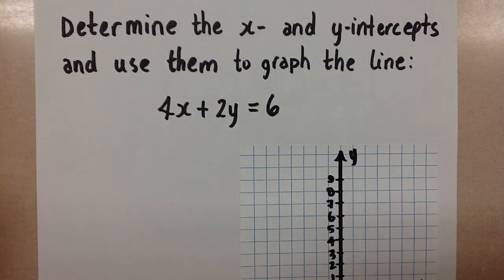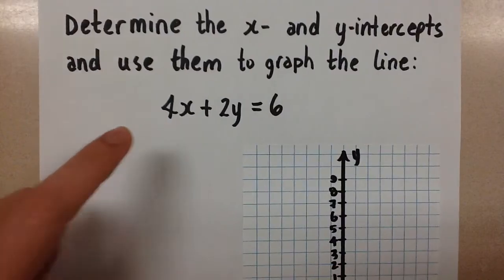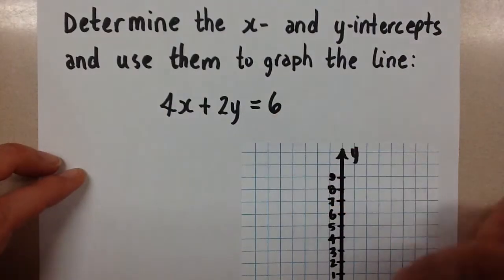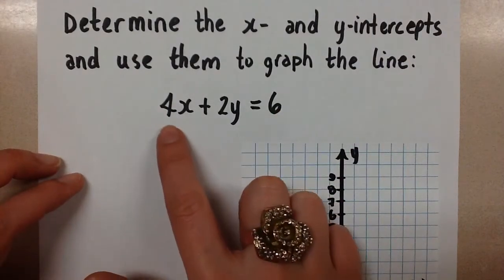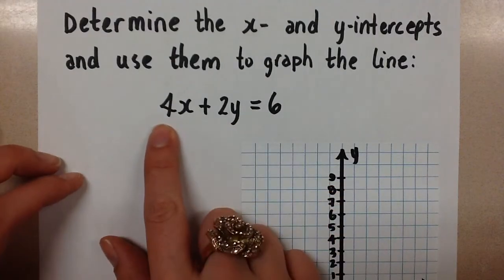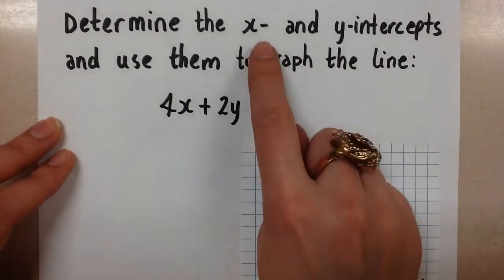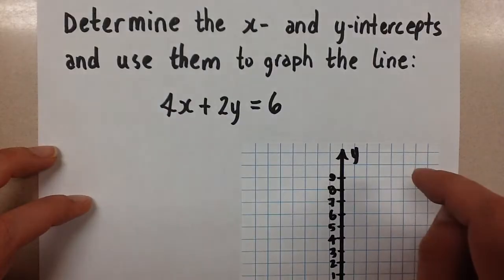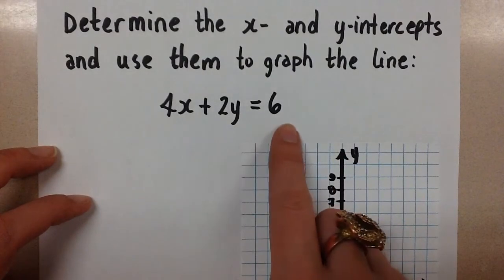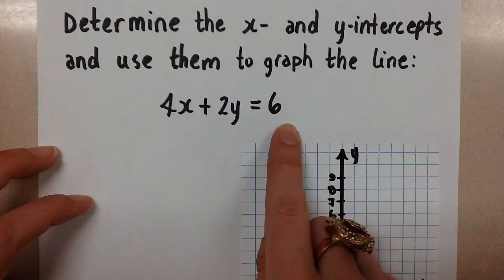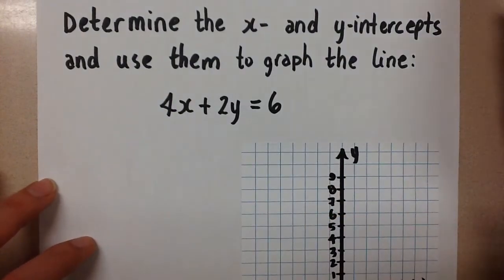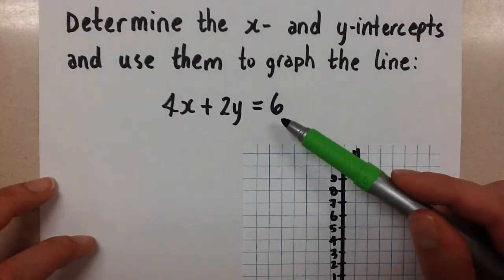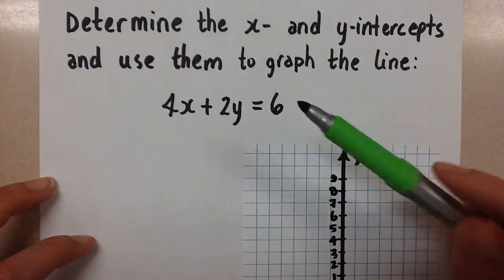Hi guys, Mrs. A here. We have an equation in standard form and we want to find the x and y intercepts of this line in order to then graph the line. Having the equation in standard form is really helpful for this particular method. If we wanted to find the slope and y intercept to graph it, we would rearrange it into slope y-intercept form, y equals mx plus b, and use the slope and y intercept. But if we want to use the x and y intercepts, we want to start with standard form because it's more useful.